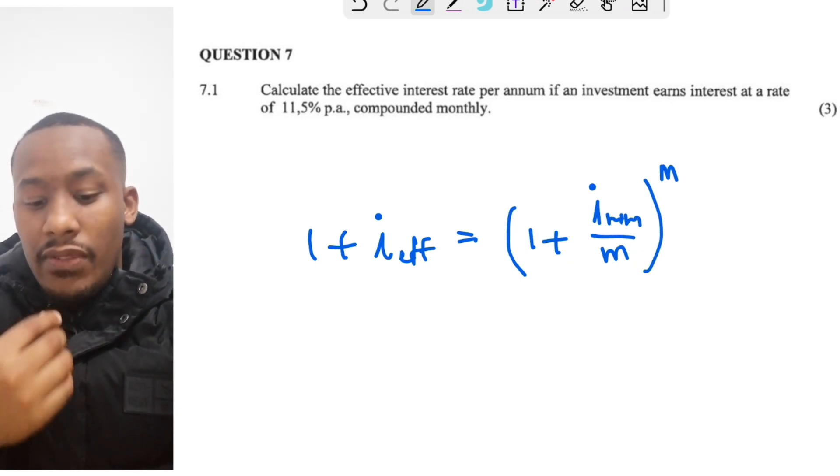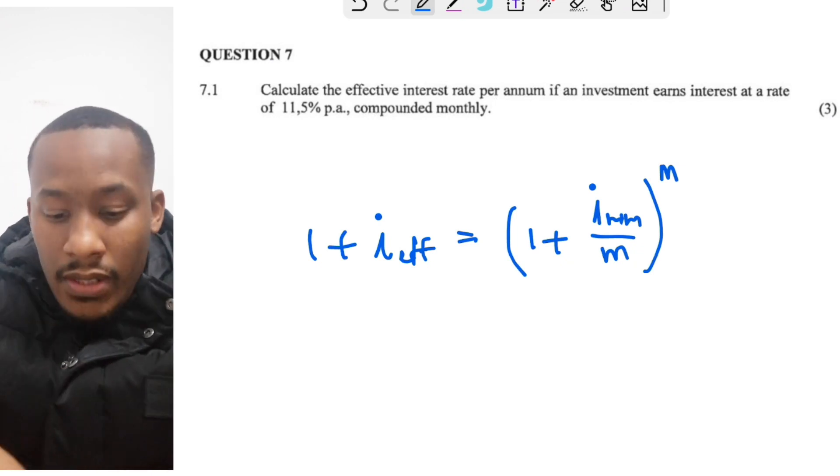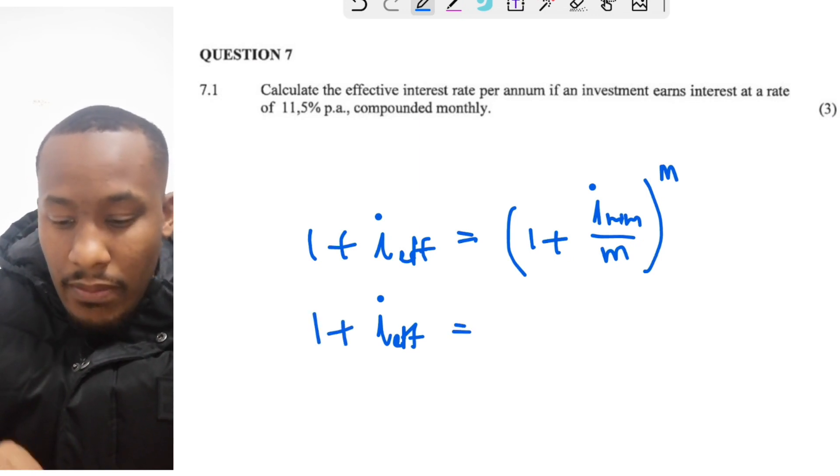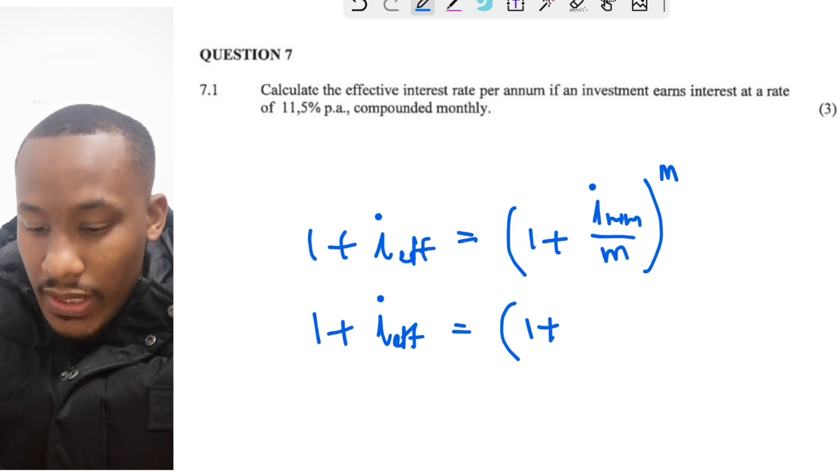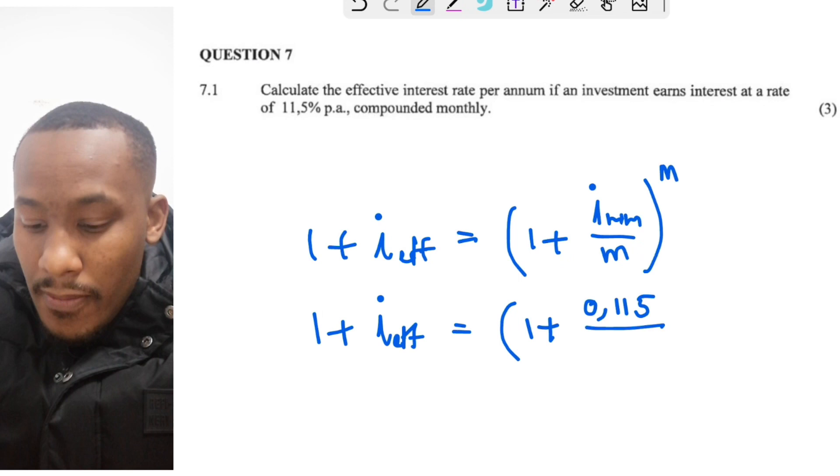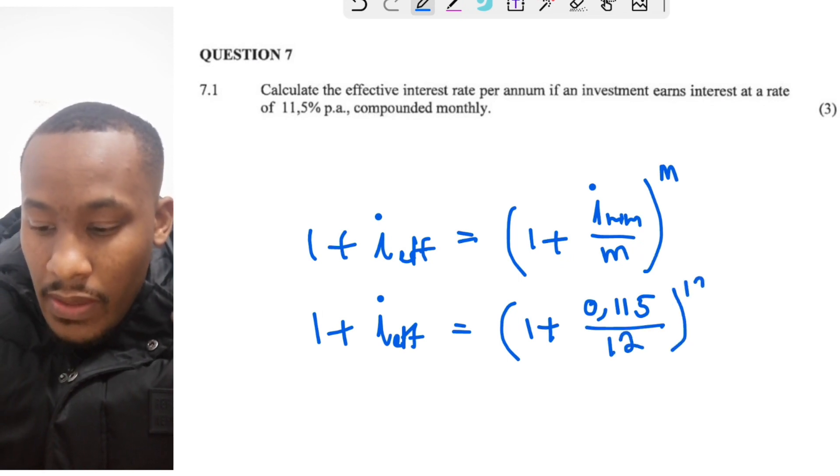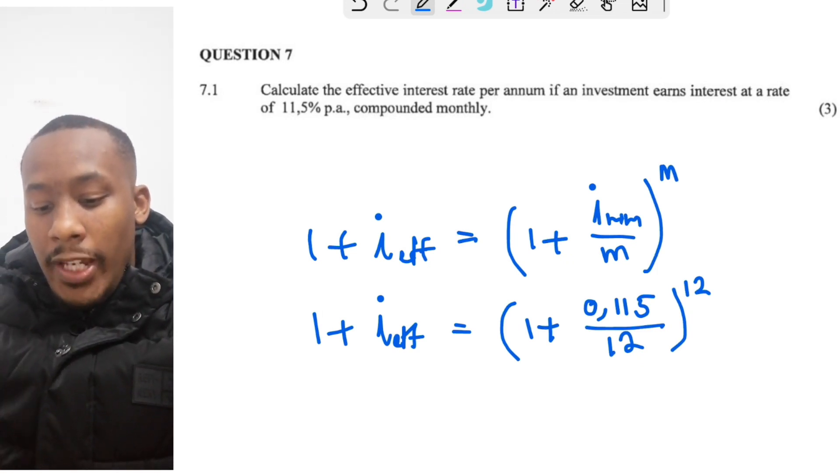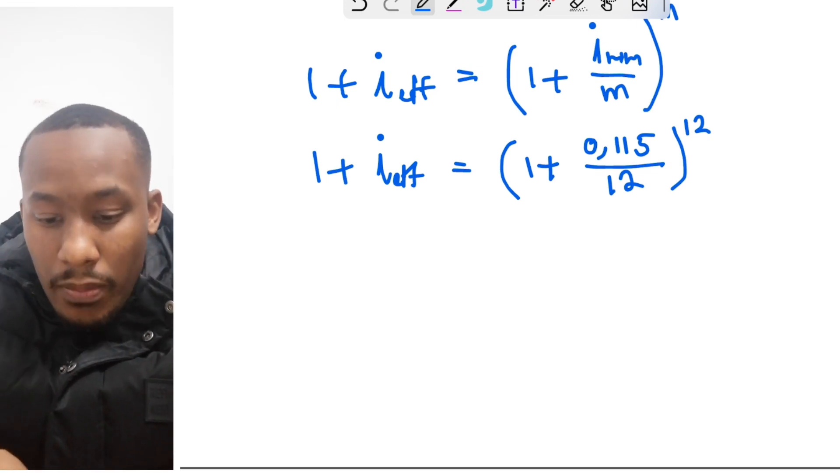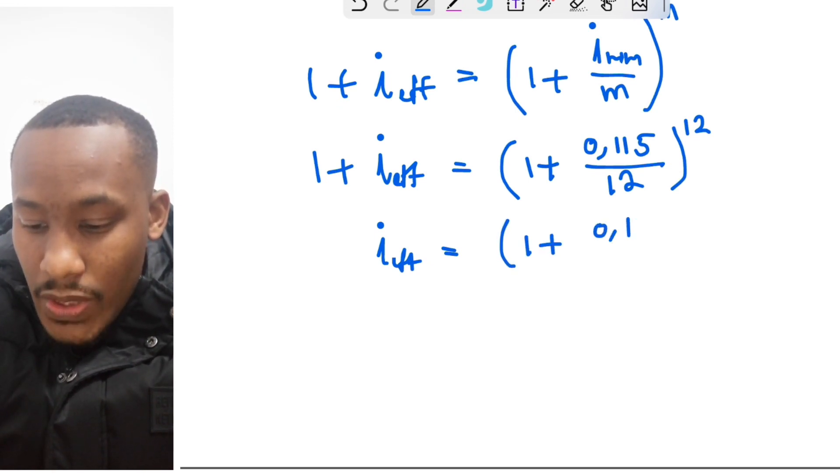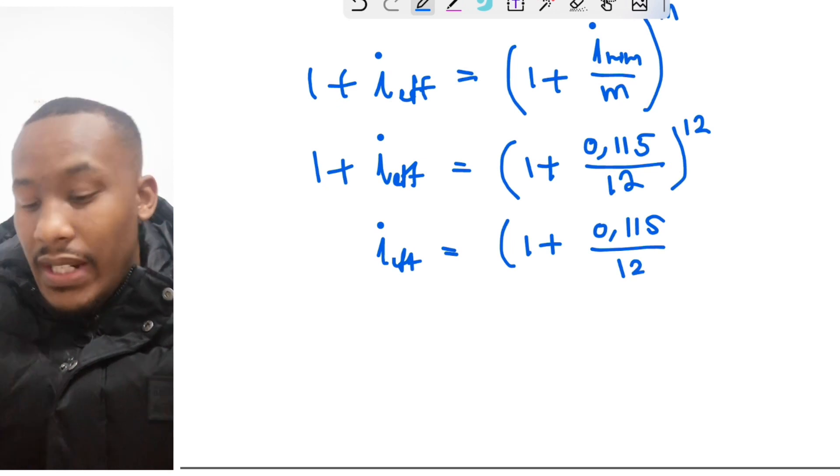Let's first substitute our values and then we're going to work out i effective. That's the variable that we'll be trying to solve. So your nominal interest would be 11.5%, that is represented as 0.115. And it's compounded monthly, so we'll both divide by 12 and raise that bracket to the power of 12.